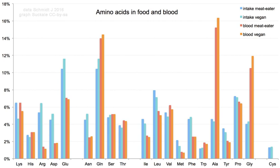In the general structure, R represents a side chain specific to each amino acid. The carbon atom next to the carboxyl group — therefore numbered 2 in the carbon chain starting from that functional group — is called the alpha carbon. Amino acids containing an amino group bonded directly to the alpha carbon are referred to as alpha amino acids. These include amino acids such as proline which contain secondary amines.